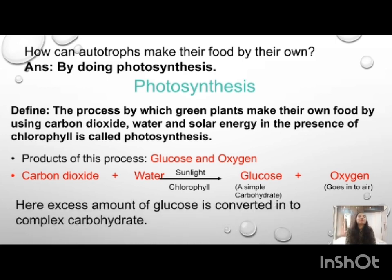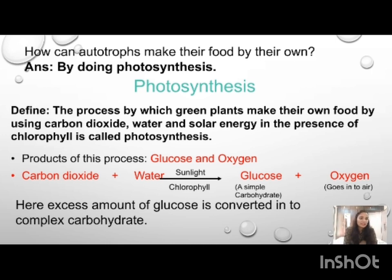The excess amount of glucose is converted into complex carbohydrate. Simple carbohydrate is easily digestible and easily oxidized, while complex carbohydrate is not easily digestible and not easily oxidized. The example of simple carbohydrate is glucose. Complex carbohydrates include starch and cellulose. We can eat starch, but we cannot digest cellulose because cellulose-digesting bacteria are not present in our body.